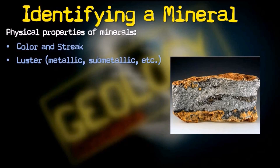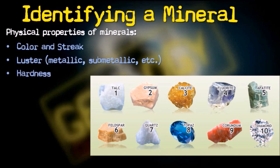Next is lustre — the appearance of the surface of a mineral in reflected light. Any mineral will either have a metallic or non-metallic lustre. If the mineral reflects light very well, the lustre is considered metallic, as seen in galena (PbS) and antimony. Non-metallic lustre occurs when some light waves pass through the mineral; varieties include adamantine (as in diamond), vitreous or glassy, greasy, pearly, silky, dull, or earthy.